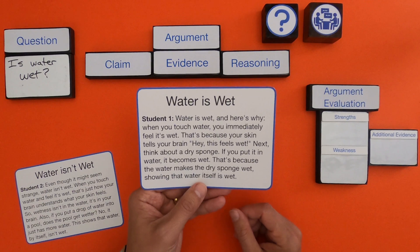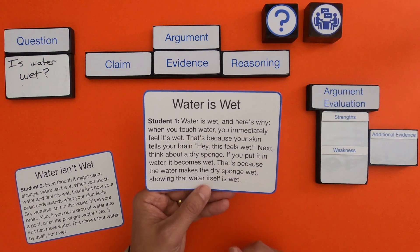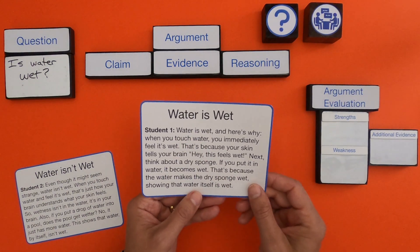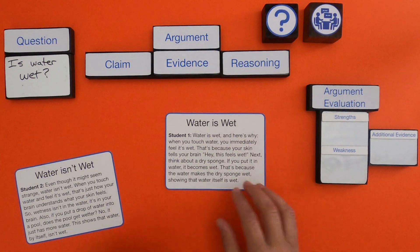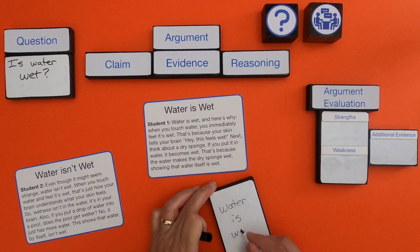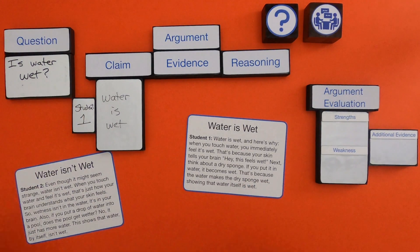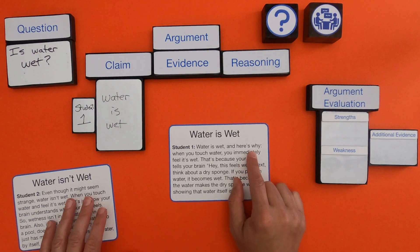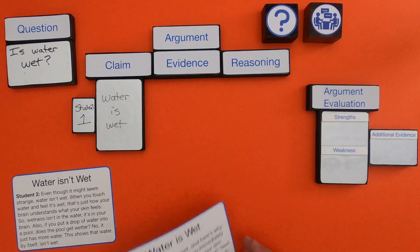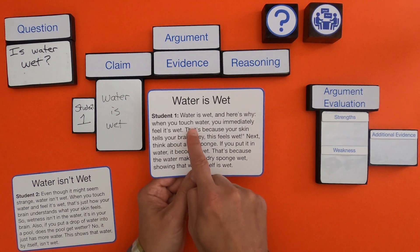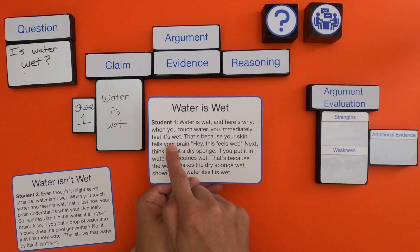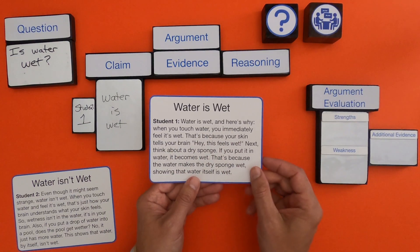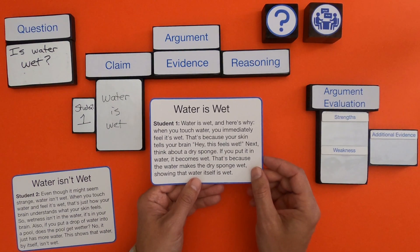Walking through student one's argument slowly: the student says 'water is wet, and here's why.' Right at the beginning you can see the claim. So for student one, water is wet — that's the claim. Continuing: 'When you touch water you immediately feel it's wet. That's because your skin is telling your brain.' In that next bit we can see both the evidence and the reasoning.